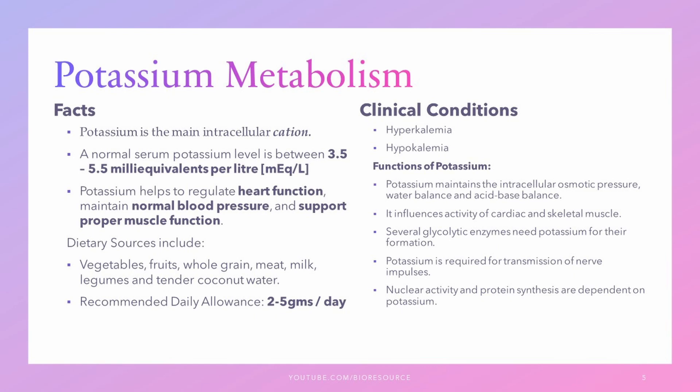Coming to the next mineral — potassium. Potassium is the main intracellular cation and the normal serum potassium level is between 3.5 to 5.5 milliequivalents per liter. Potassium helps to regulate heart function, maintain normal blood pressure, and support the proper functioning of muscles. The dietary sources include vegetables, fruits, whole grains, meat, milk, legumes, etc. The recommended daily allowance is 2 to 5 grams per day.